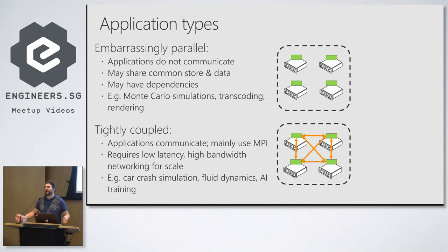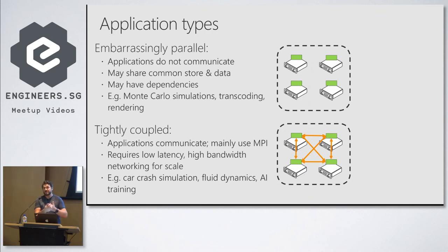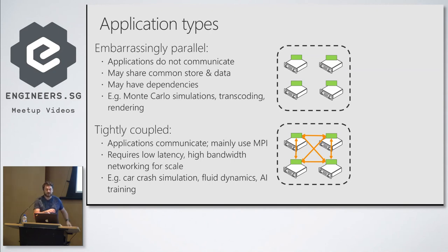K-fold cross-validation is embarrassingly parallel — there's absolutely no reason to sit there twiddling your thumbs running every single fold on your local workstation. The harder scenario is tightly coupled — situations where all nodes participating in the HPC problem need an intermediary update of information during the compute process. Large-scale deep neural network training is a canonical example — every time you run a mini-batch you need to update weights across the entire cluster, so the compute problem fundamentally becomes a networking problem.